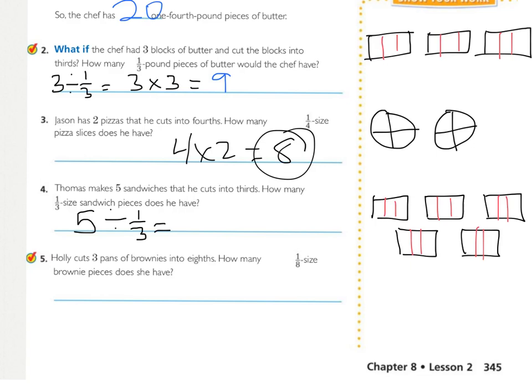And so there's five groups. And how many inside each group? Three. So how many one-third size pieces are there? There are 15 sandwich pieces.